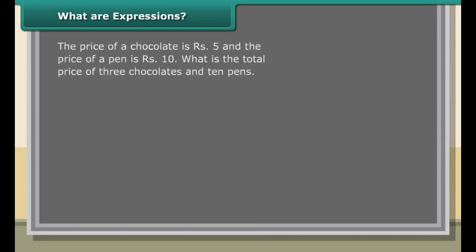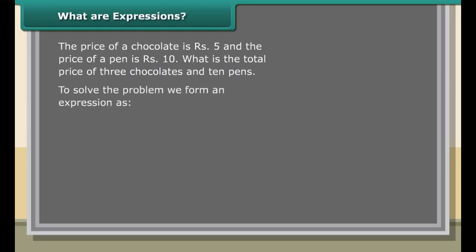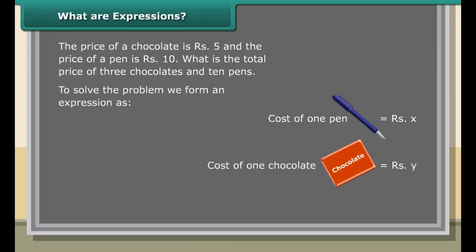What are expressions? The price of a chocolate is rupees 5 and the price of a pen is rupees 10. What is the total price of 3 chocolates and 10 pens? To solve this problem, we form an expression: cost of one pen equals rupees X, cost of one chocolate equals rupees Y. Cost of 3 chocolates equals 3Y, cost of 10 pens equals 10X. Total cost equals 3X plus 10Y, which equals 3 into 5 plus 10 into 10, which equals 15 plus 100, which equals 115 rupees.